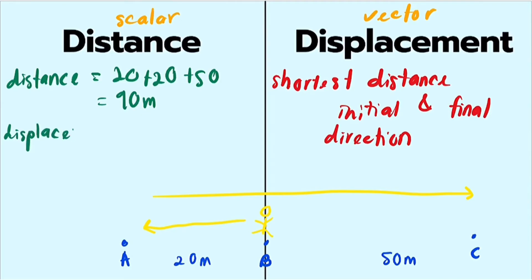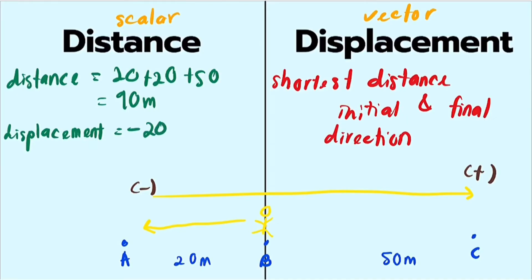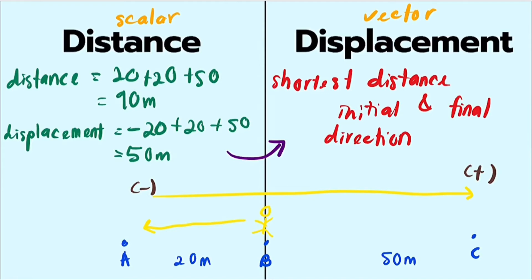However, when looking for displacement, it is a bit different. When finding a vector quantity, you must set a specific direction. By default, motion to the right is positive and motion to the left is negative. So: moving left to A is negative 20, then right is positive 20, then right again to C is positive 50. The total displacement is 50 meters, which aligns with the definition: the shortest distance between initial and final position in a specific direction.